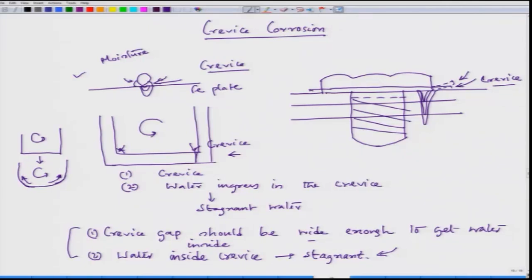This is a typical example of how we can improve design to avoid some of the deadliest forms of corrosion. In the case of the bolt, we have to first try that there should not be any crevice. One way is we can chop off these particular edges so the gasket does not protrude out, and the crevice is avoided. This is the design factor we can think of.